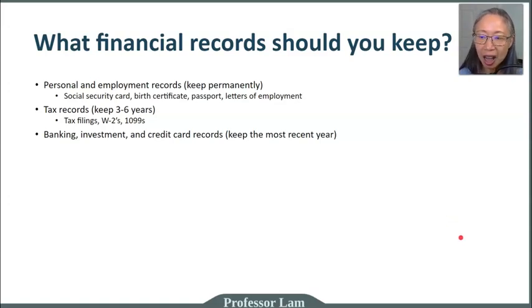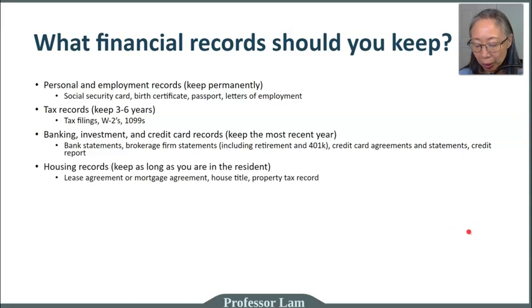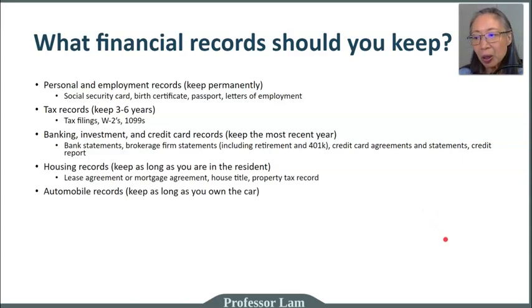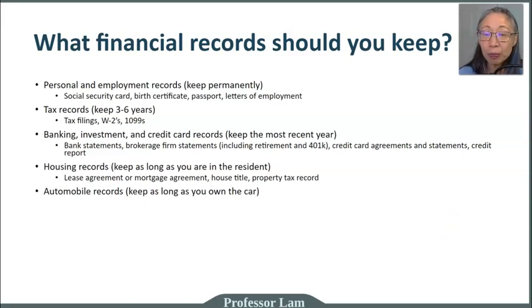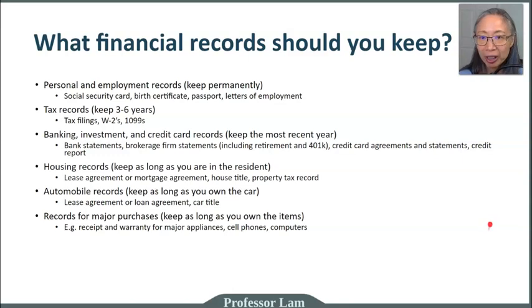The next type of records are property records. This includes your lease agreement for your house, or if you own your house, your mortgage agreement, your house title, and your property tax. For your car, you should also have the title, loan agreement, or lease agreement. It's a good idea to keep those in paper form, or if you prefer, scan the documents electronically. For major purchases, you should definitely keep the receipt for at least the warranty period — particularly for electronics such as a cell phone or computer in case you need to make a warranty claim.